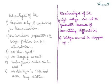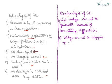The advantages of DC are: it requires only two conductors for transmission, saving copper and cost; no inductance, capacitance, or related problems in DC transmission; no skin effect; no charging current; underground cables can be used; and no stabilizer is required over long distances. The disadvantages of DC are: high voltage cannot be generated due to commutating difficulties, and voltage cannot be stepped up.